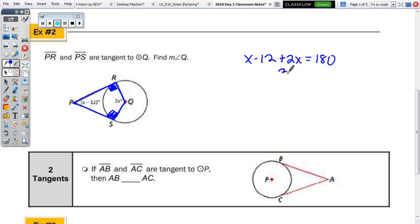So, X minus 12 plus 2X equals 180. Or, you could do all four add up to 360. Add the 12 over. We get 192. Divide by 3. 64.